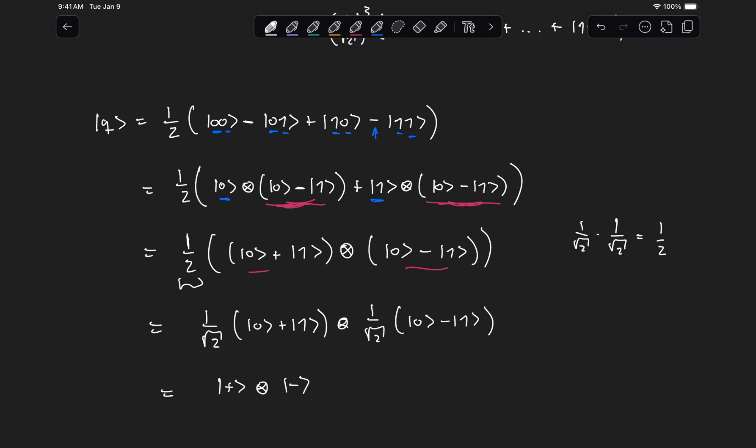So here we have factorized this into an individual state for q1, an individual state for q0, which means this state is separable.